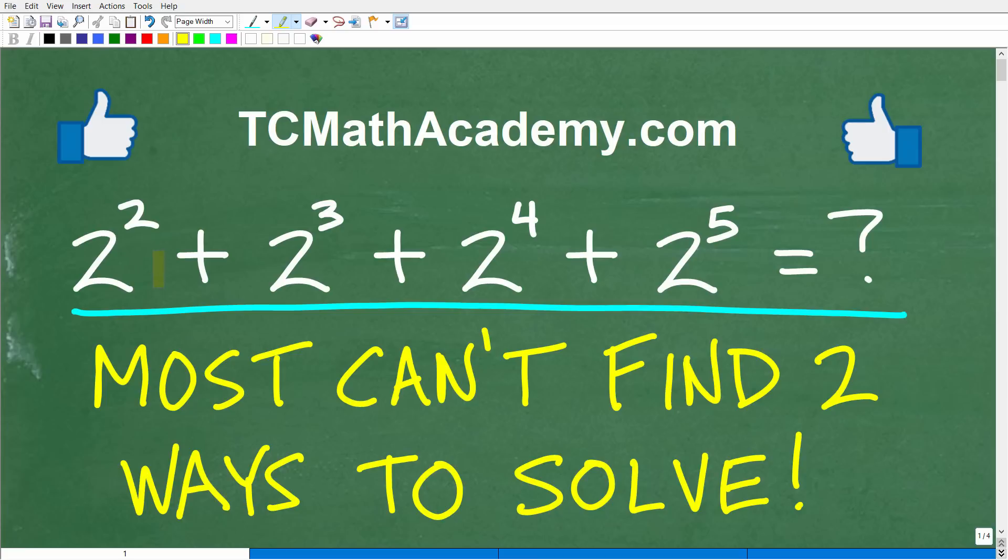Of course, we can see it, but just in case you're not quite sure what the question is, we have 2² + 2³ + 2⁴ + 2⁵. We want to get this down to one single value, and if you can do this, go ahead and put your answer into the comment section and maybe talk about the different techniques or the one technique that you know how to do this problem with.